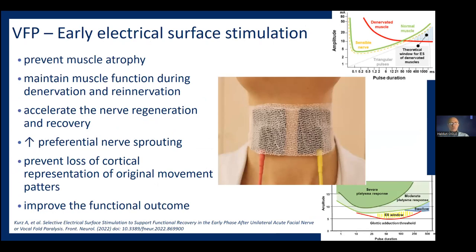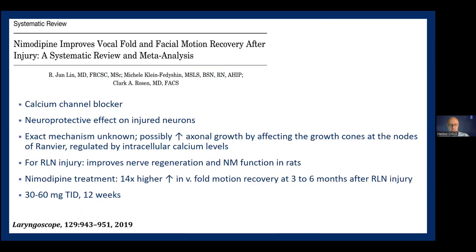Is there any space for using early electrical surface stimulation? Some studies say yes, showing that it increases preferential nerve protein expression and improves functional outcomes. Is there any space for using medications? Some studies say yes as well: nimodipine — a calcium channel blocker — increases axonal growth by affecting growth cones at the nodes, leading to 14 times higher vocal fold motion recovery when compared at three or six months after vocal fold dysfunction.